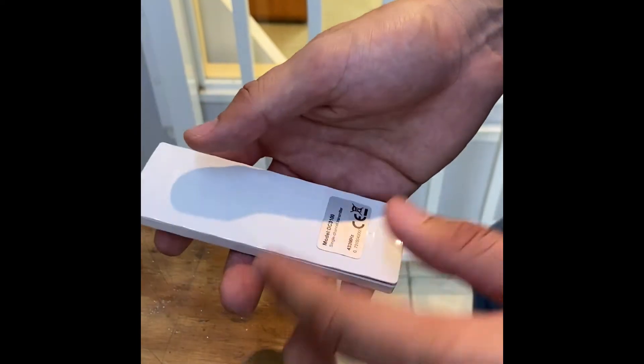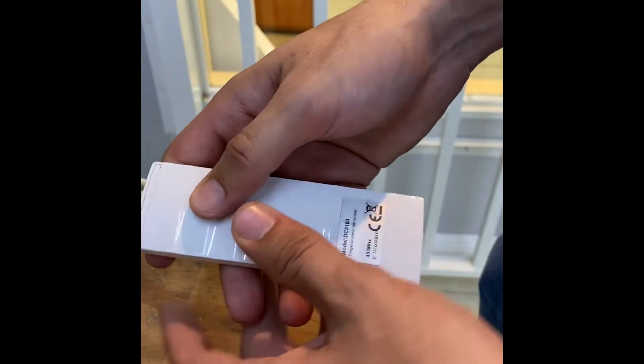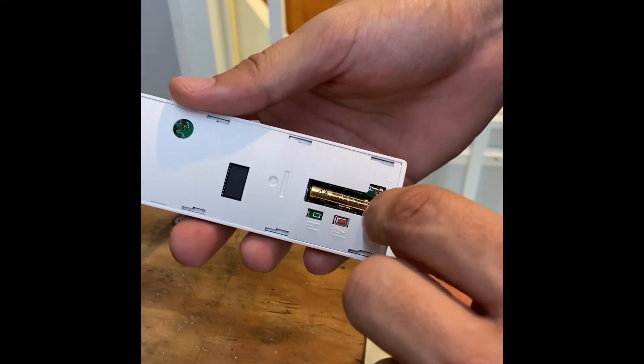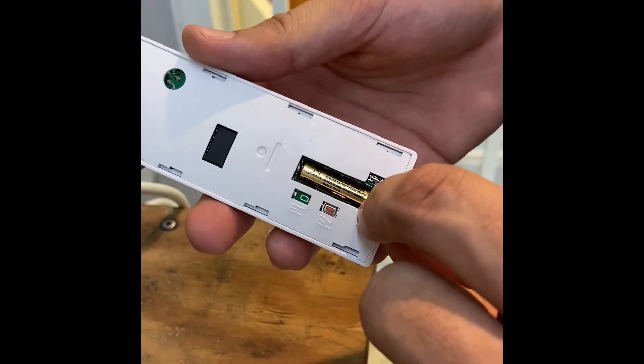Now we're ready to program the remote. You have to remove the battery cover by sliding it down. Note there's usually a clear film in between the battery. We already went ahead and removed it.